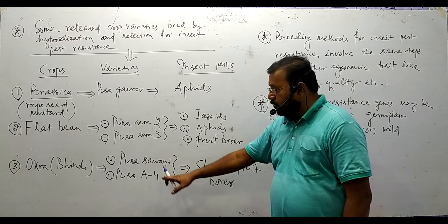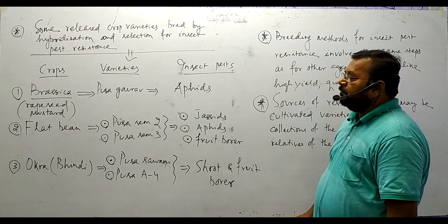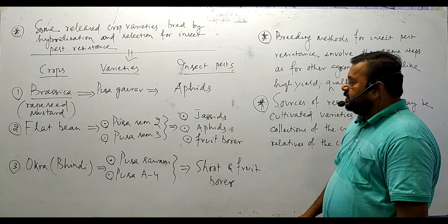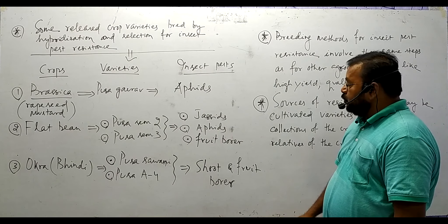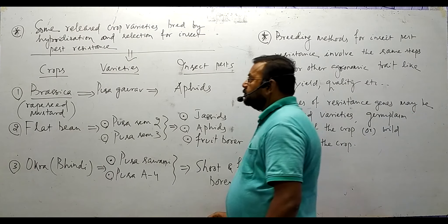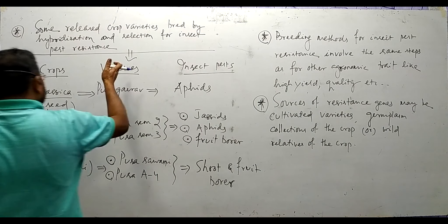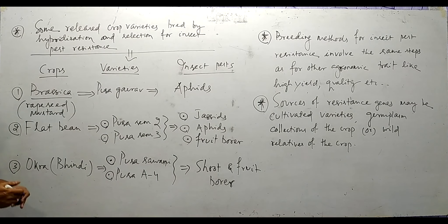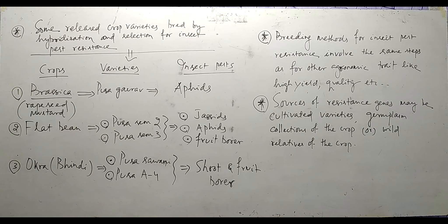These are examples of some released crop varieties bred by hybridization and selection — a conventional method for insect pest resistance. Next, we will go to plant breeding for improved food quality.